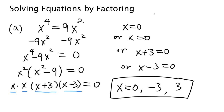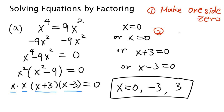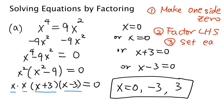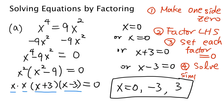Okay, now let's recap what we did for this problem. The first step was to make one side 0. The second step was to factor the left-hand side. The third step is to set each one of these factors equal to 0 — we're going to get several equations. And finally, the fourth step was to solve each one of these simplified equations to get the solutions.